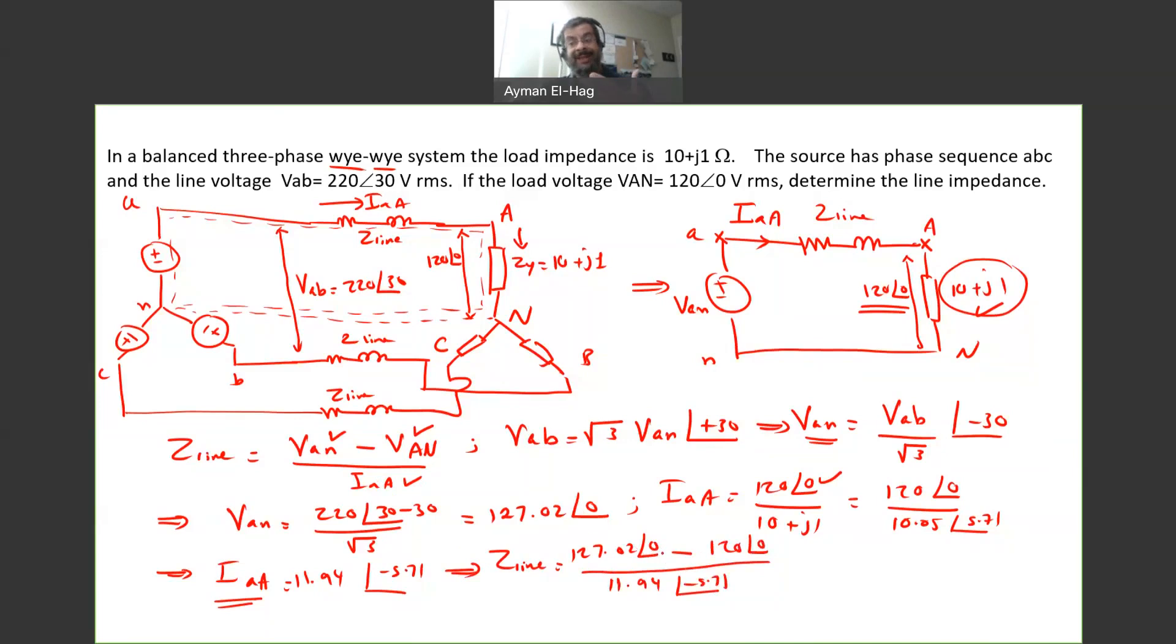Now, these are having the same angle, so we can just subtract them. So this becomes equal to 7.02, divided by 11.94, and an angle of plus 5.71, which is equal to 0.59, angle of plus 5.71, one ohm.